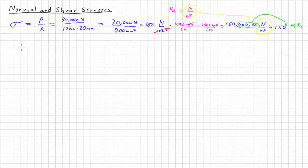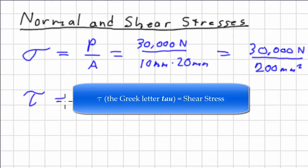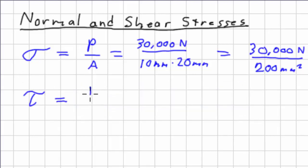Now shear stress is denoted using the Greek letter tau. And it's also force over area, but this is the area in shear. What do I mean by that?